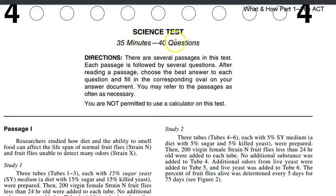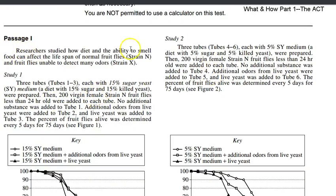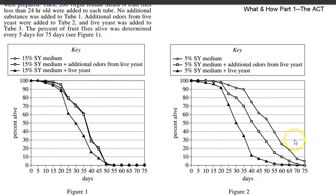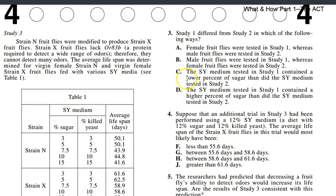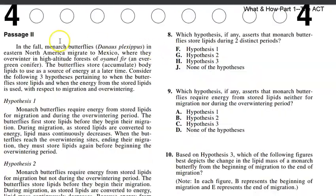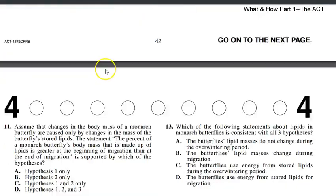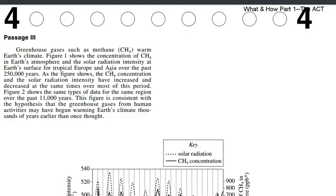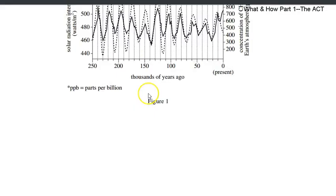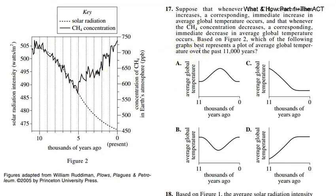Here you can see the science test — 35 minutes and 40 questions. Passage one gives you some text with a lot of data and charts, followed by about seven questions. Passage two has a bit more text, with hypothesis one and hypothesis two that you'll be asked about — also about seven questions. Passage three is back to a lot of data, with a graph. It looks very confusing, but once you dig into it, you'll find that a lot of these are much easier than they look from the outside.